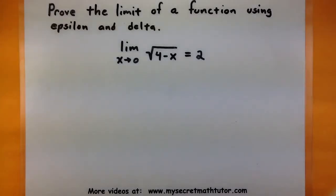For this video, I want to prove that the limit of a function exists using an epsilon and delta proof. So for this limit, I'm looking at the limit as x approaches 0 of the square root of 4 minus x is equal to 2.